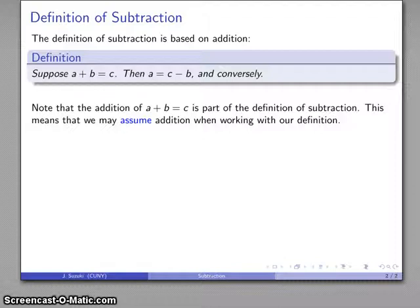And again in line with earlier problems, I may have called to prove something, and the thing to notice here is that my addition here, a plus b is equal to c, is part of my definition of subtraction. Which means that when I go to prove a subtraction statement, I can assume the addition, and I don't have to say too much about it.